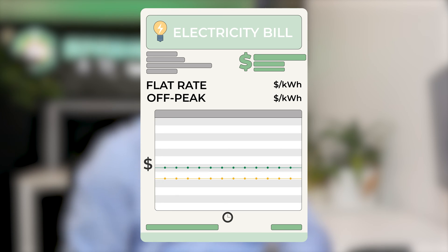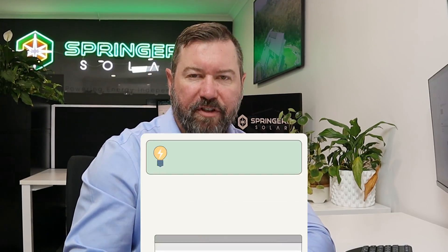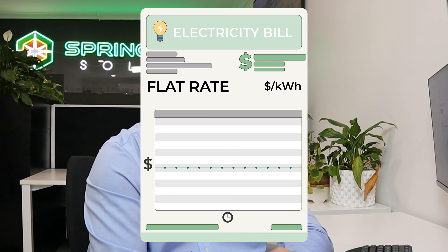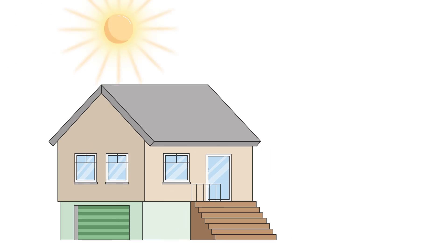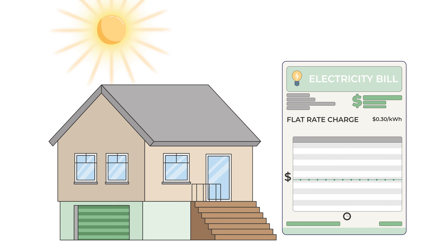The first bill we're going to look at is a flat rate electricity bill with off-peak charges. A flat rate or single rate electricity bill is a bill where we get charged for the electricity consumed at one rate — a certain rate of cents per kilowatt hour for the entire bill. That rate does not change dependent on time of day, time of use, or for the demand you're using. There is a rate on the bill for the general electricity power and there's also an off-peak rate for our hot water system.